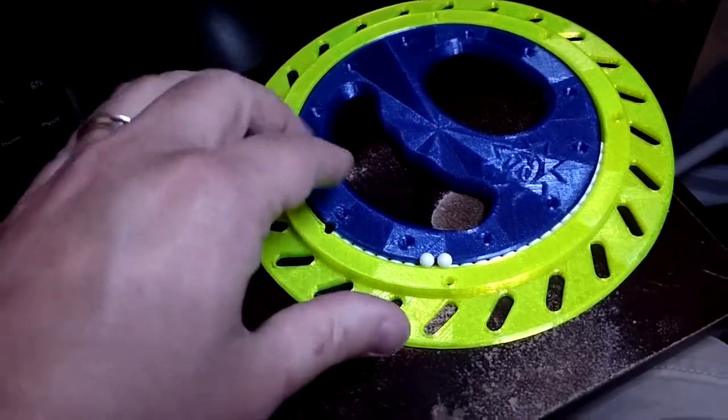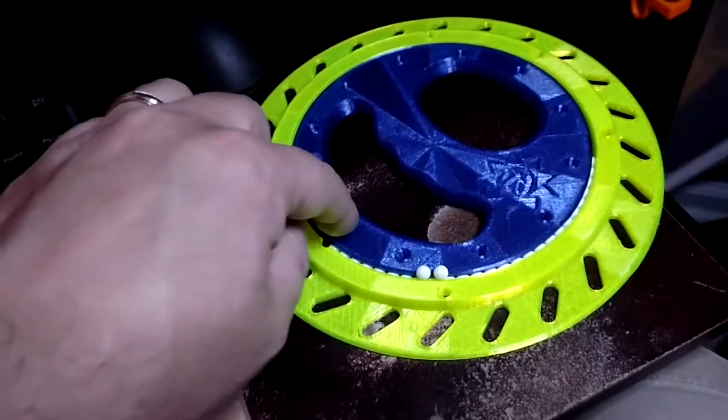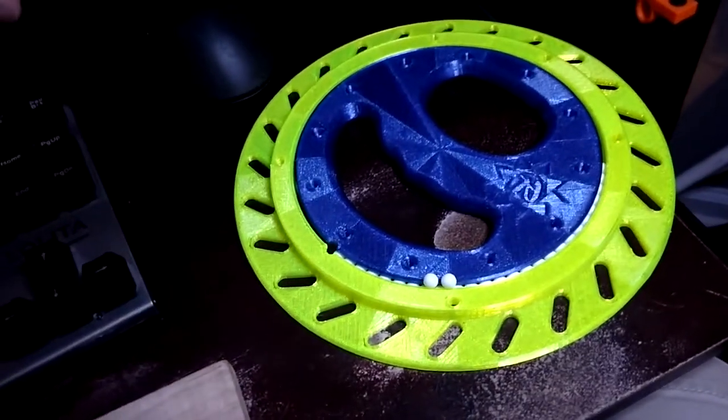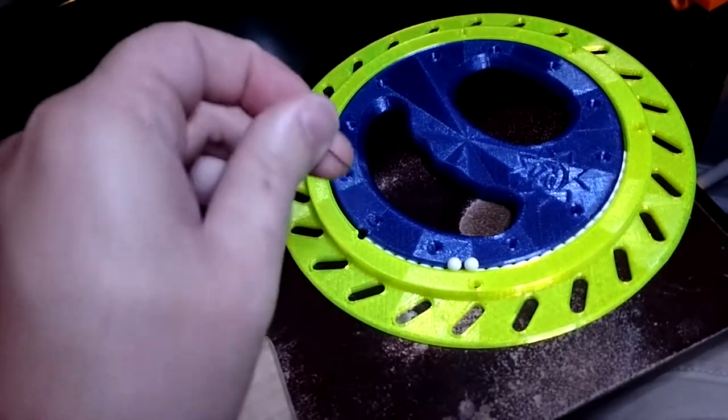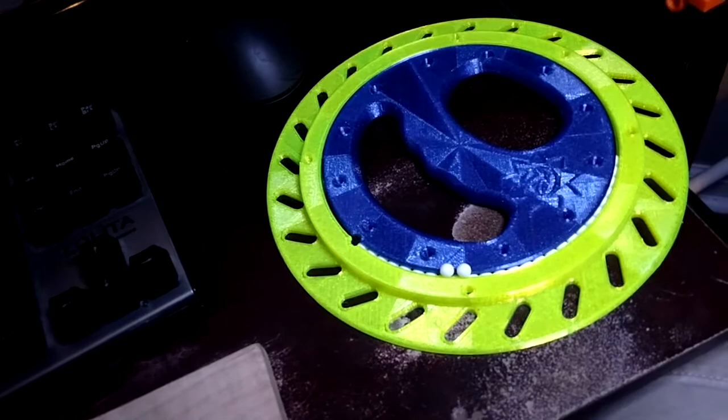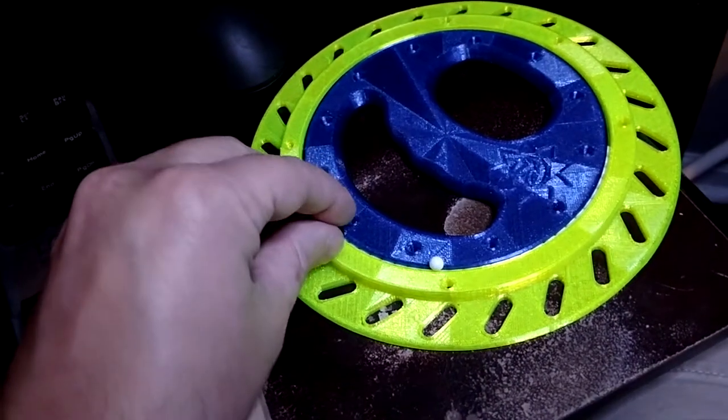And it should spin nice and freely. If you put too many in there, you can pop one out. Just take a little needle, like a sewing needle like this, and you can pop it out from the back. So it's not that big a deal. And that's how you put them in.